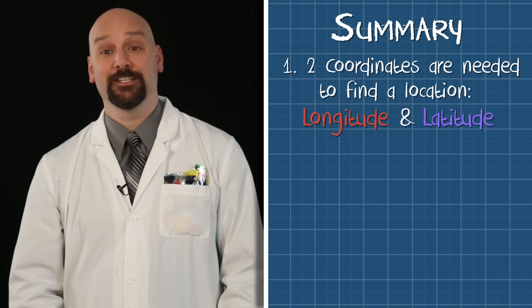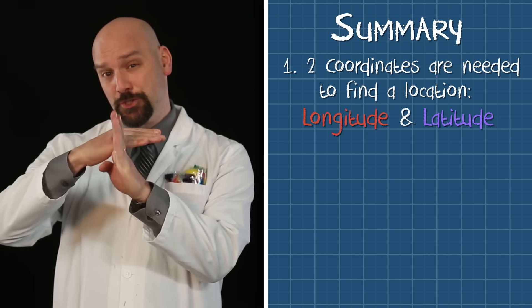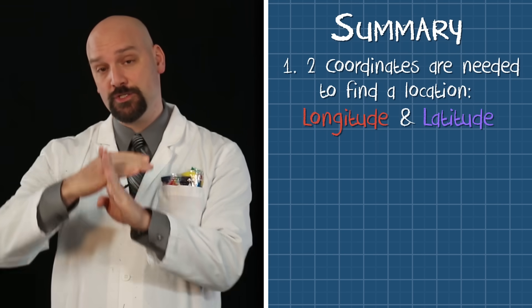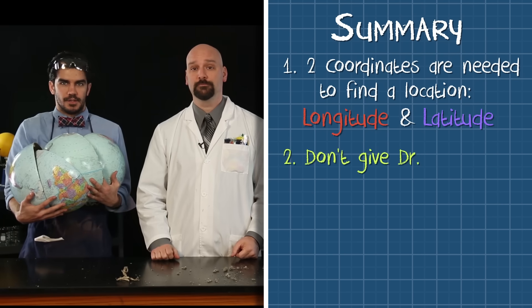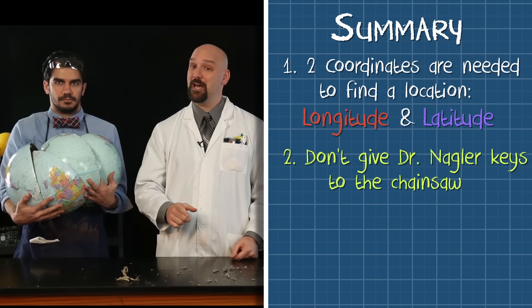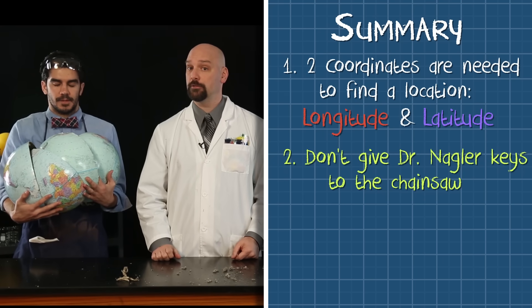That's right. Latitude and longitude are invisible lines used for navigation that intersect at specific points. What else did we learn? I learned not to give you the keys to the chainsaw. That's not all. Didn't we learn what the two halves of the globe are called? Hemispheres.